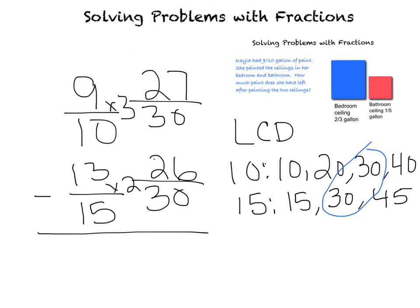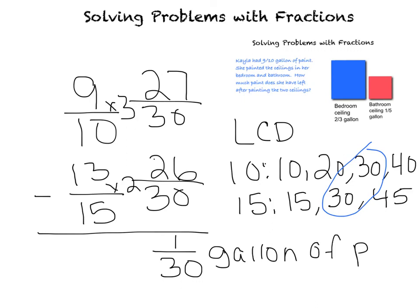Can I reduce that? Nope. So how much paint does she have left? Kayla has one thirtieth gallon of paint left. We call that the Natalie rule, because she'll come up and tell me that I did the problem wrong. So that's how you do it. You have to read the problem, find out what it is that you're exactly being asked to do, and then use what you've learned over the last several days to solve the problem. And that's all there is to it. I love me some fractions.